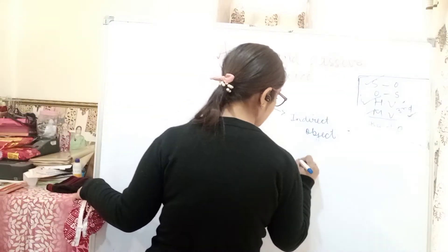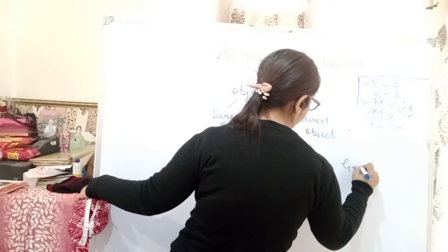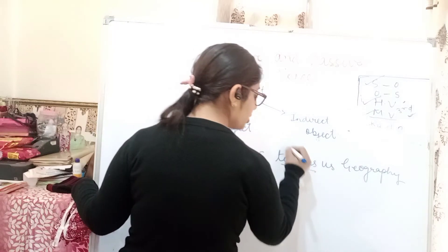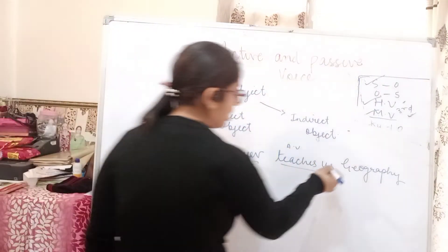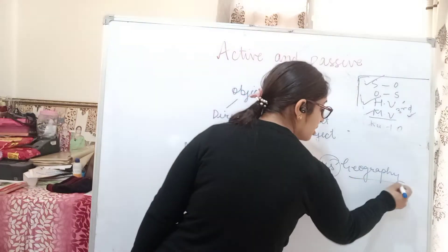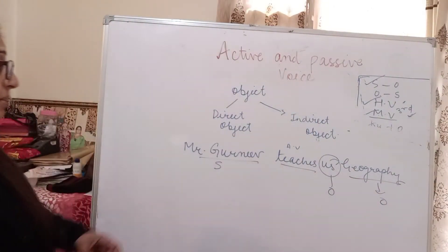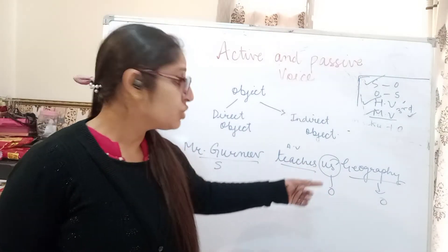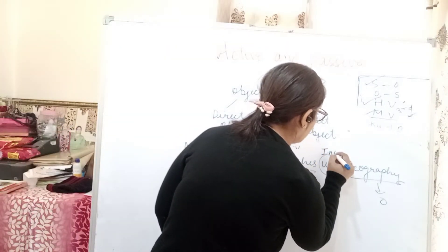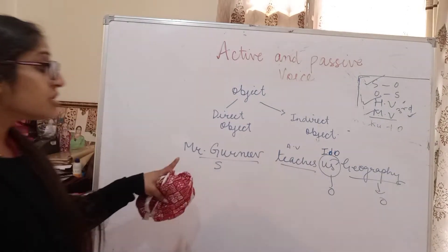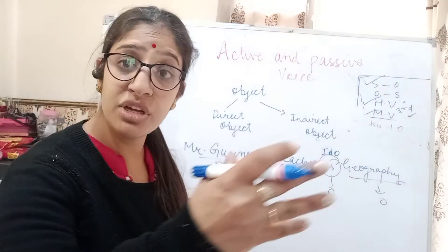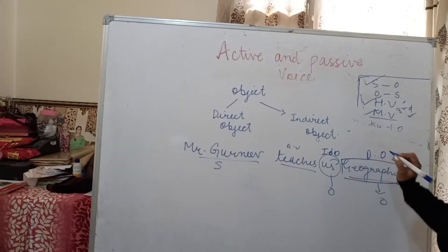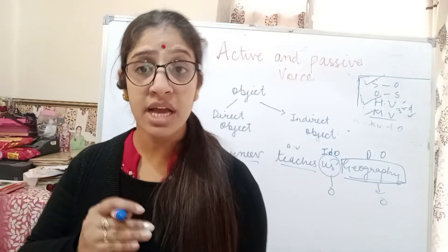Take another example: 'Mr. Gurneev teaches us geography.' If I say 'Mr. Gurneev teaches us,' we are not getting a complete meaning. But if I say 'Mr. Gurneev teaches geography,' we are getting complete information — that he teaches geography. So geography is your direct object, and 'us' is the indirect object. I hope you have understood indirect and direct object.